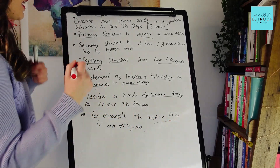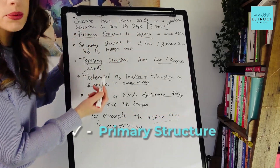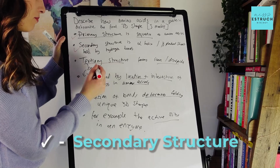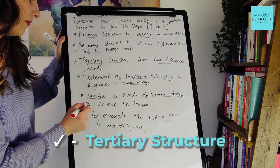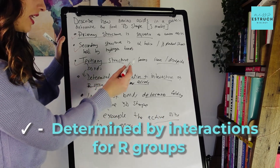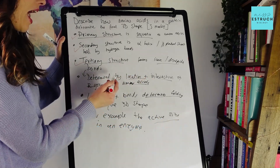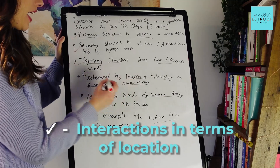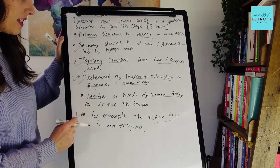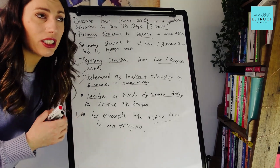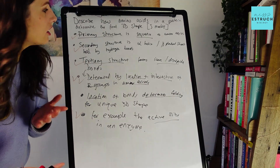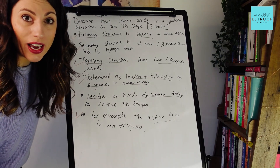Looking at the mark scheme: one mark for describing primary structure, one for secondary structure, one for tertiary structure. There were actually two separate marks — one for the interactions of R groups in terms of their location, and one for location of bonds determining folding. The mark scheme even accepted quaternary structure: if you have more than one polypeptide chain, that gives a slightly different unique 3D shape as well. So six marks' worth of content available for the five-mark question.